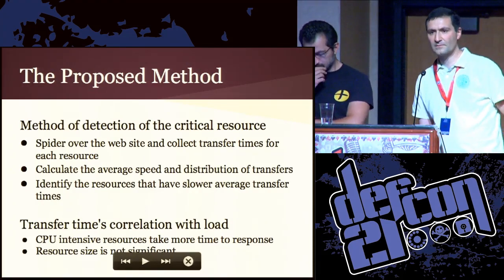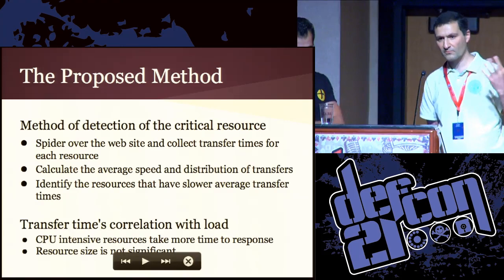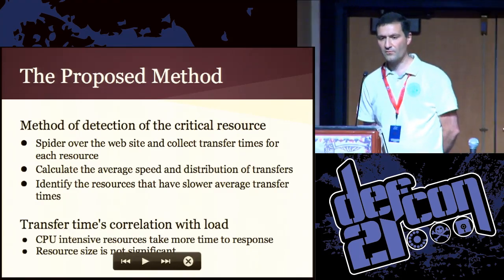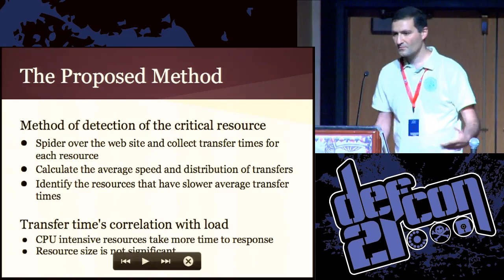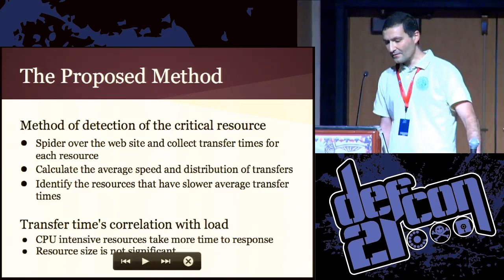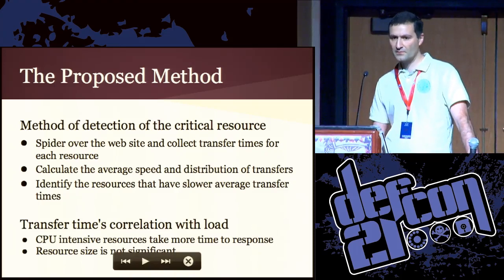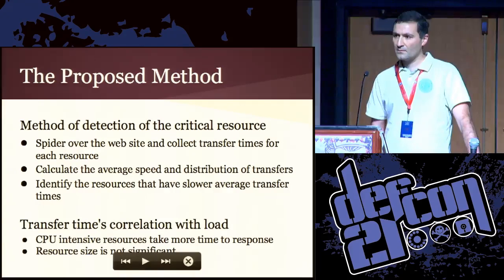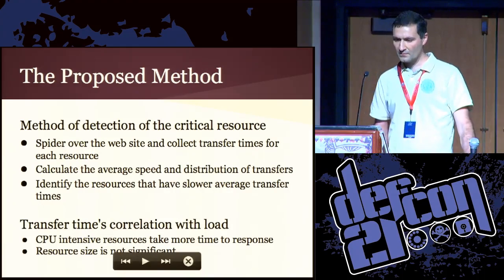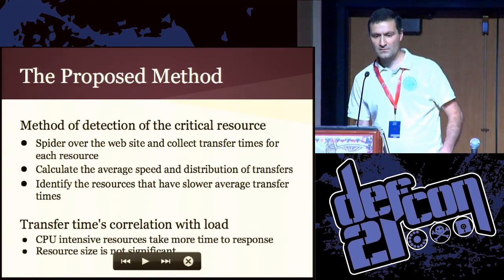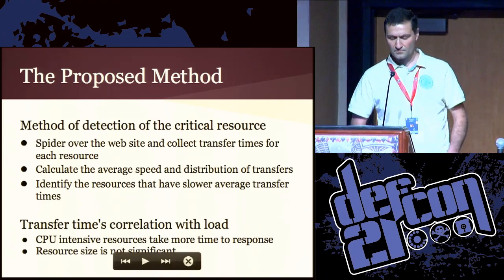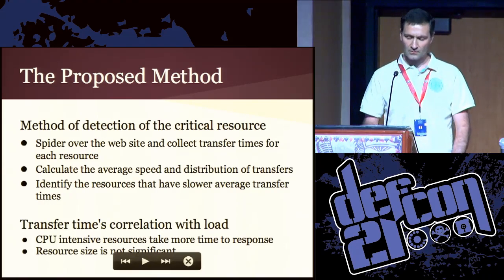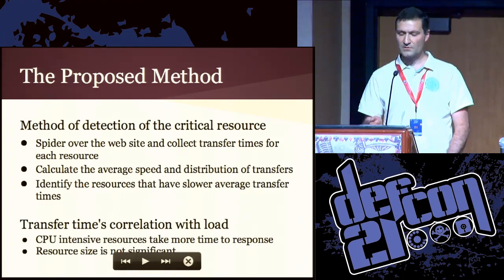So how do we do this? The point of this tool — the information from the future — is picking the resources, out of all the available ones, that are most painful for the server. So how do we do this? We spider the website, collect and compile a list of resources, and then we start measuring certain things — for example, the download speed or the start-to-download time. This gives us a lot of data, and what deals very well with a lot of data is statistics. We use statistics to filter through the data. We calculate the average of all the download times, which gives us a baseline of what is a normal transfer time.